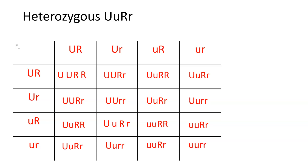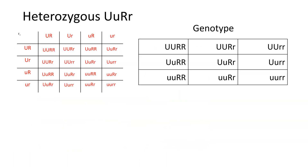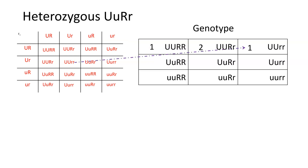Once we have the Punnett Square done, we can see how the genes pair up and begin looking at genotype. The different genotypes from the table are: UURR — we've got one of those; UURr — we have two; and UUrr — we've got one.